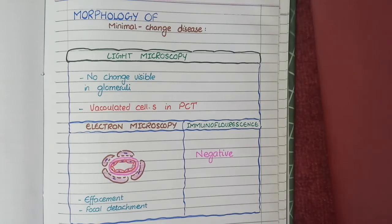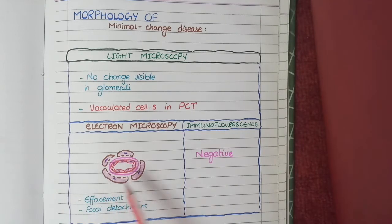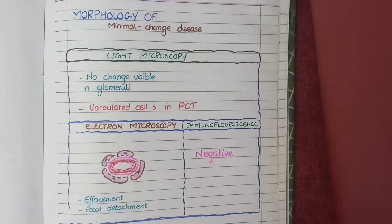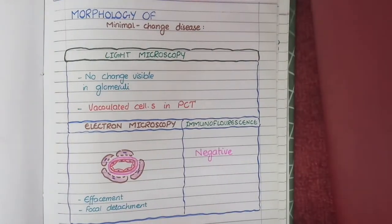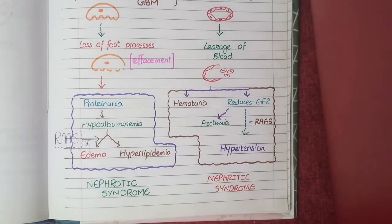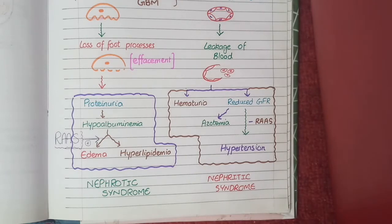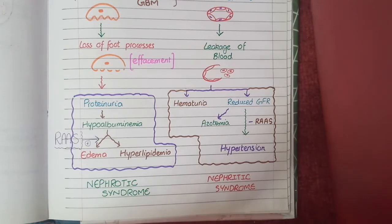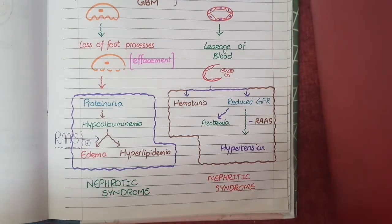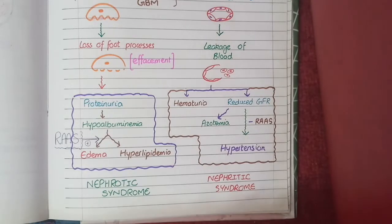In summary for minimal change disease: light microscopy shows no or minimal visible change; electron microscopy shows effacement or focal detachment of podocytes; and immunohistochemical staining is negative for antibodies or complement proteins. Clinically it presents with nephrotic syndrome: edema, hypoalbuminemia, proteinuria, and hyperlipidemia. In most children the disease resolves with a short course of corticosteroid therapy, though a small number are non-responders.